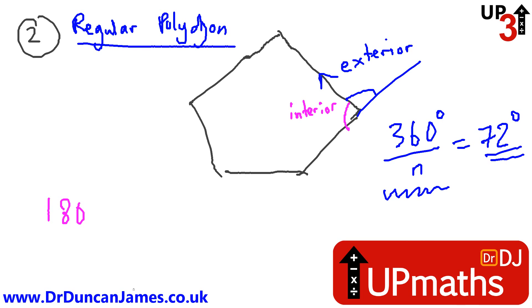Interior angle. If it's a regular polygon, I like to use this method for the exterior angle, and I also use it for the interior angle. There are other methods of finding the interior, but why don't you just do 180 minus 72, which is then 108.